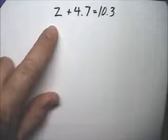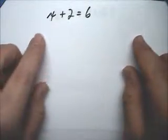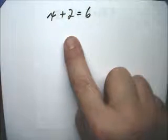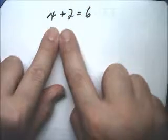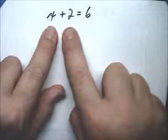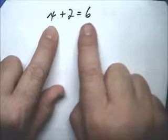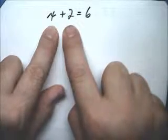This one, I claim, is exactly like this one. Here, x plus 2 equals 6, and we get the answer, which is of course 4, by doing 6 take away 2.